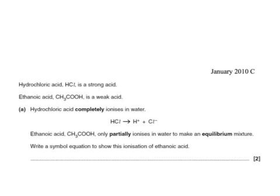Another past paper question: hydrochloric acid, HCl, is a strong acid whereas ethanoic acid is a weak acid. It shows the equation for hydrochloric acid completely ionising in water and asks us to write a similar equation for ethanoic acid, which only ionises partially in water. For ethanoic acid, instead of a one-way arrow, we use a reversible arrow, showing it forming CH₃COO⁻ and H⁺. For the two marks, we need the equation written correctly and that reversible sign.